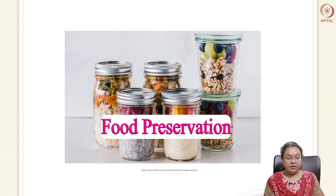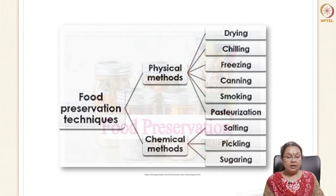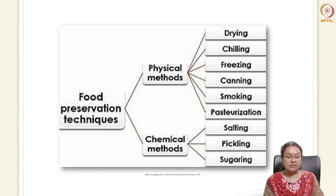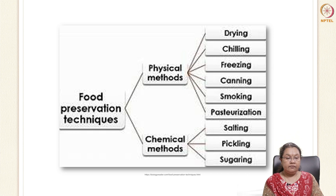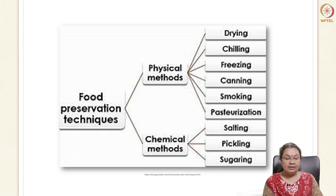The first step of protecting food is adopting a food preservation method. Generally, we use physical methods and chemical methods. Physical methods include drying, chilling, freezing, canning, smoking, and pasteurization. Chemical methods include salting, pickling, and sugaring. These are conventional methods that enhance shelf life either by reducing water activity or making water unavailable for microbial growth. Nowadays, more studies are being done on non-thermal preservation methods like high pressure processing, microwave preservation, ohmic heating, and new sterilization techniques, which protect food without using heat.